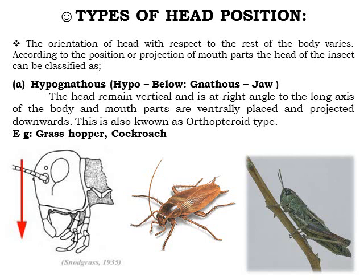Types of insect head position: the orientation of the insect head with respect to the rest of the body varies according to the projection of the mouth parts. The first type is hypognathous — directed below, with the jaw pointing downward. The head remains vertical at a right angle to the long axis of the body, and mouth parts are projected downwards. This is known as the orthopteran type, and the major insects in this category are the grasshopper and cockroach.